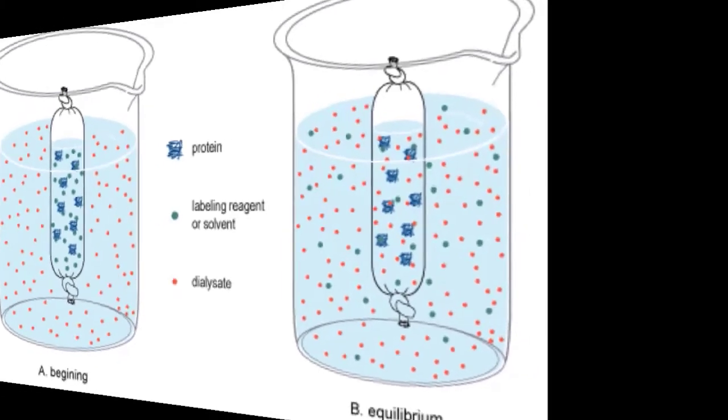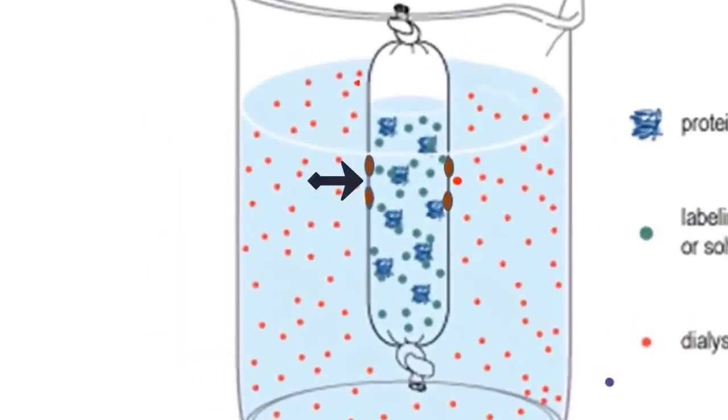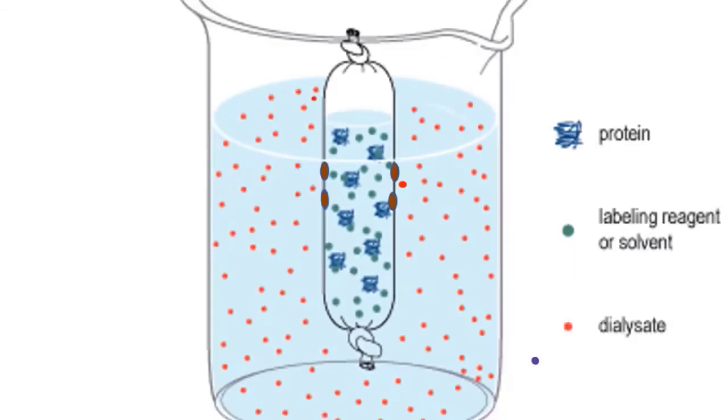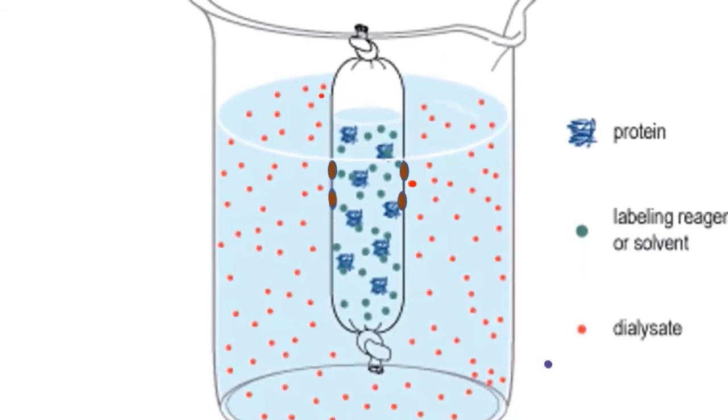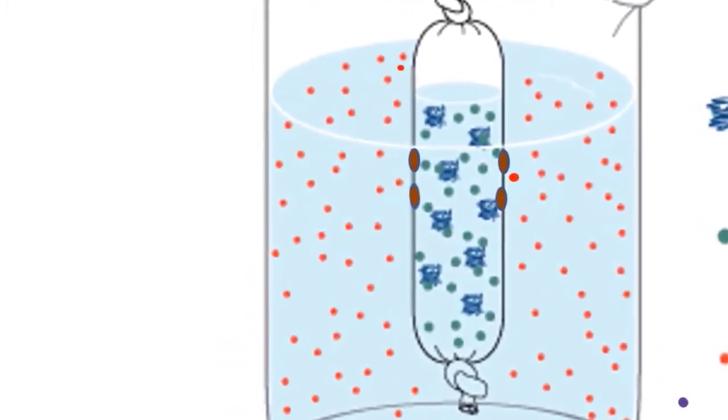It has some microscopic pores that we cannot see with the naked eye. So this tube works as a selectively permeable membrane. It would allow some molecules smaller than these pores across the membrane and any substances or molecules bigger than these pores would stay in the bag.